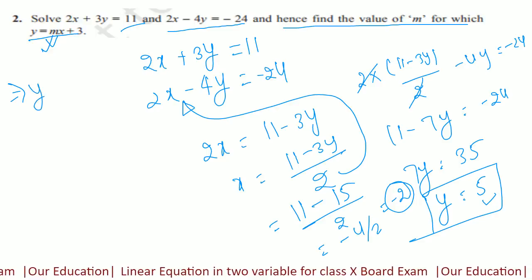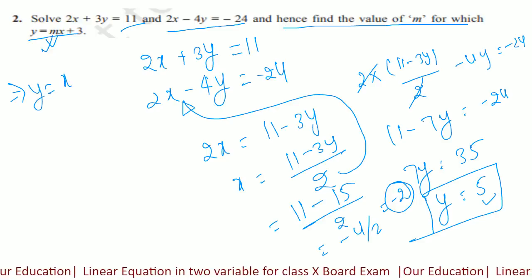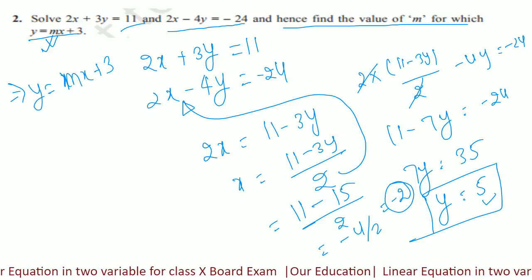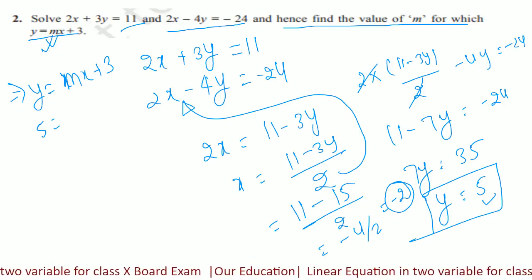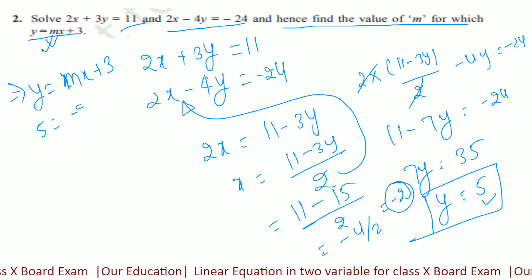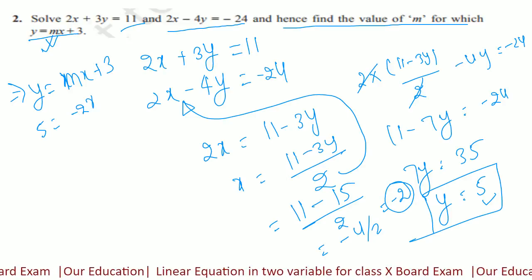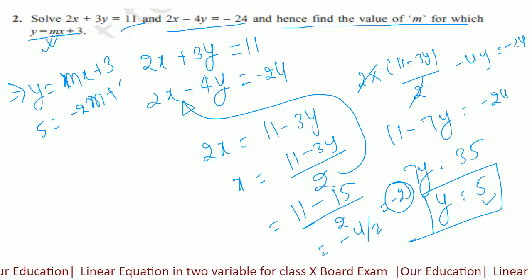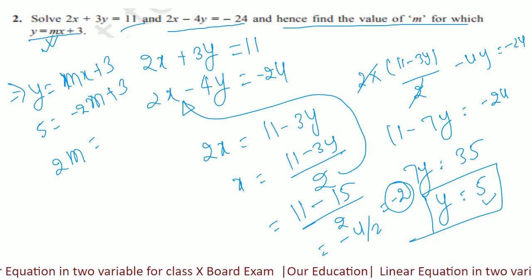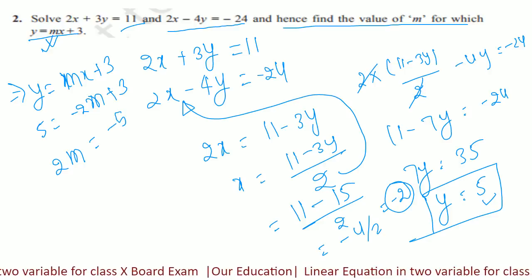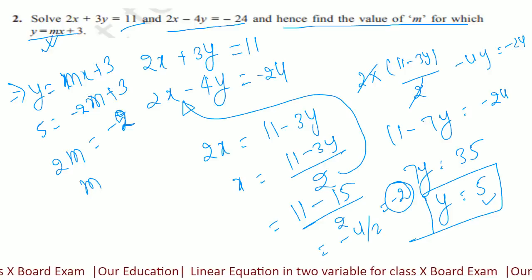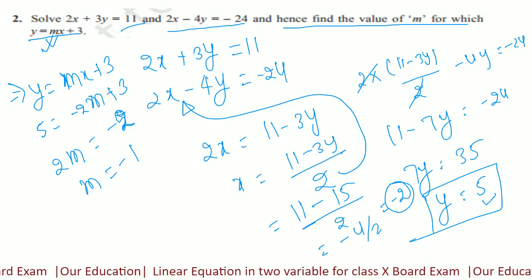आप इसे y is equal to mx plus 3 में put कीजे. तो y की value आ जाएगी 5 और x की value है minus 2. So 5 is equal to minus 2m plus 3. यह कितना होगा? 2m is equal to 3 minus 5, that is equal to minus 2. So m की value आ गयी minus 1.